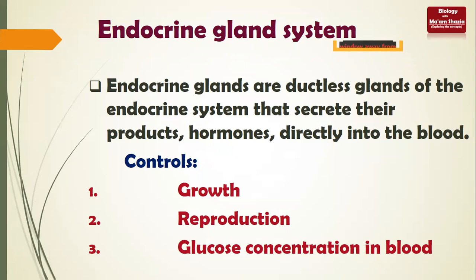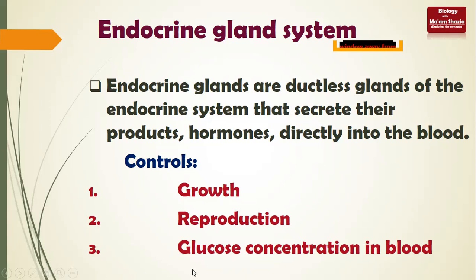Endocrine glands are ductless glands of the endocrine system that secrete their products - called hormones - strictly into the blood. This is the definition of the endocrine gland system and you need to learn it by heart. The functions of endocrine glands include controlling the growth of the body, reproduction, and glucose concentration in the body.